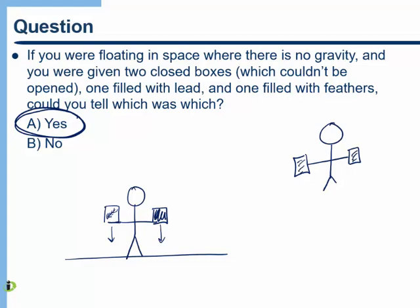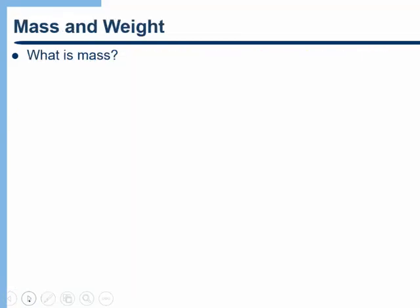The answer is we'd want to just use what we've learned from the law of inertia. We know that an object that has more mass is harder to get moving and it's also harder to stop once it's moving. So literally, if you just tried to shake each box, you would find that you could shake the box with feathers in it very easily. But if you tried to shake the box with lead, it would be much harder to get it moving and once you got it moving, it would be much harder to stop.